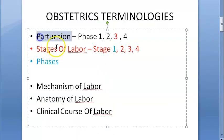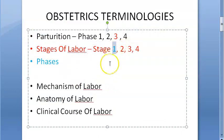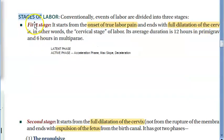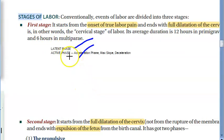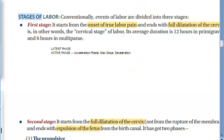Under each stage you also have the word 'phase'. Stage one of labor has two phases: latent phase and active phase. Under the active phase, again you have acceleration phase, max slope phase, and deceleration phase.